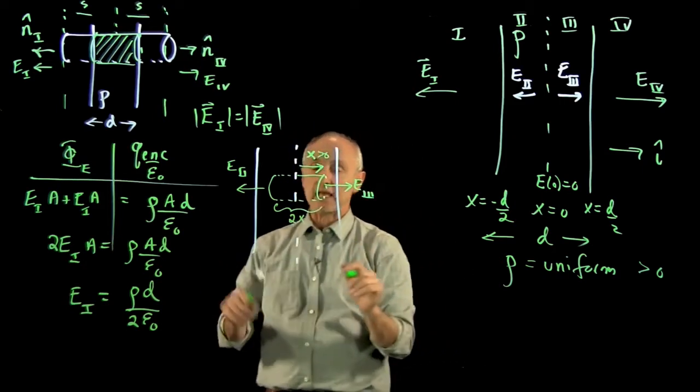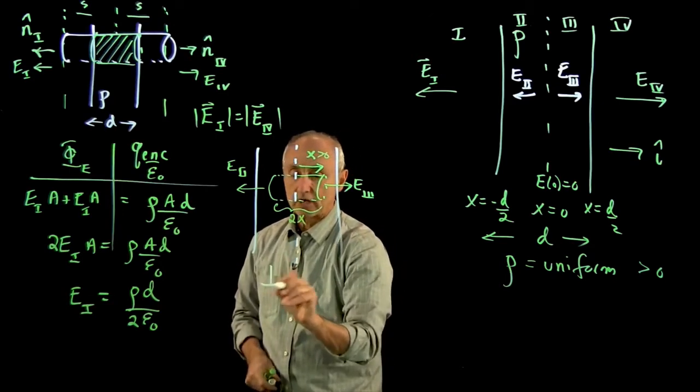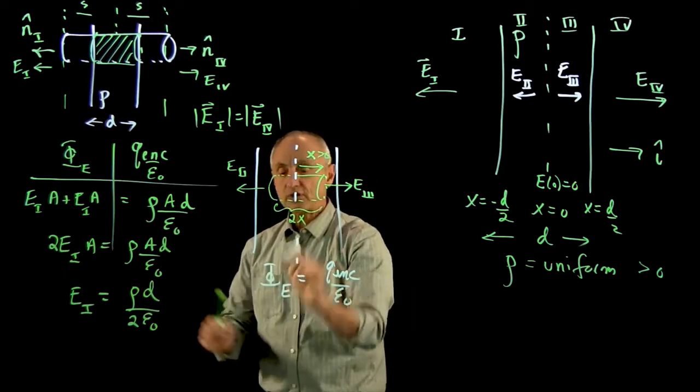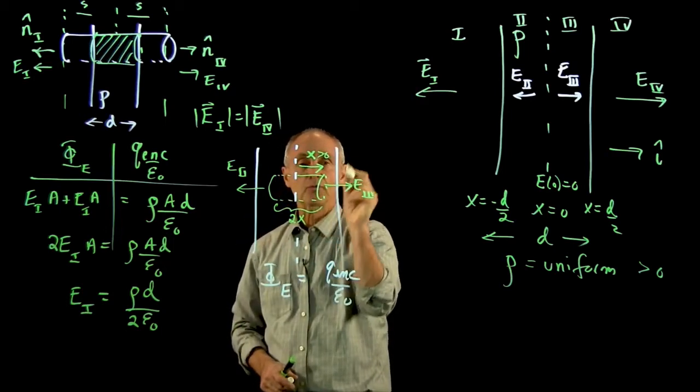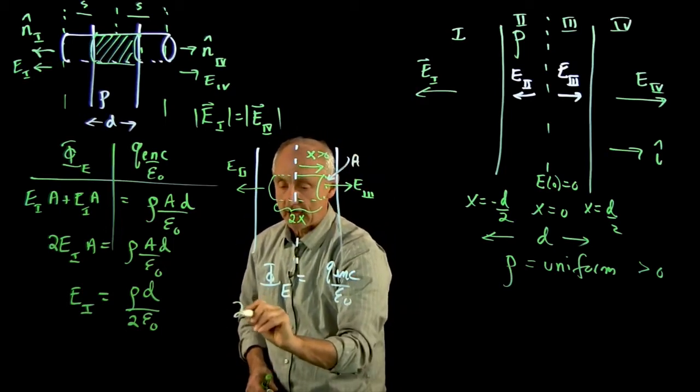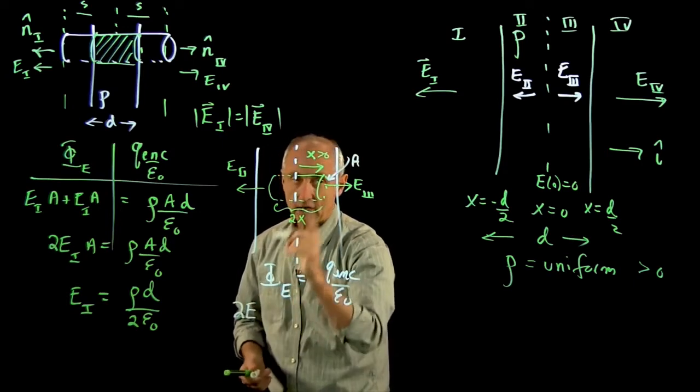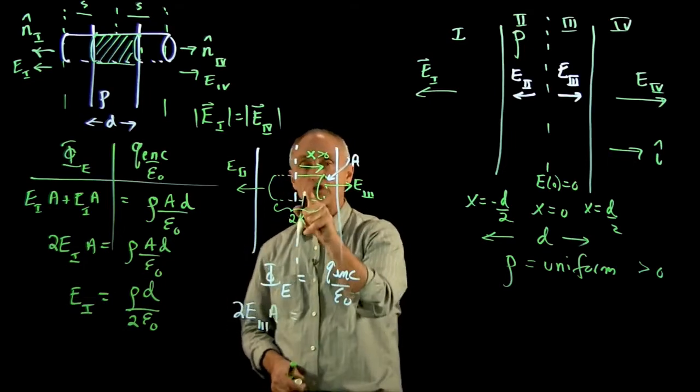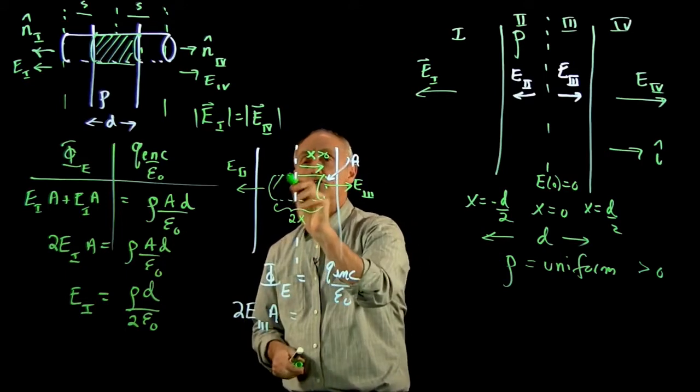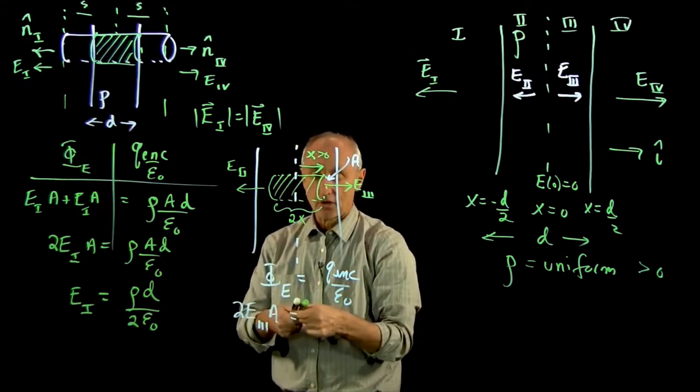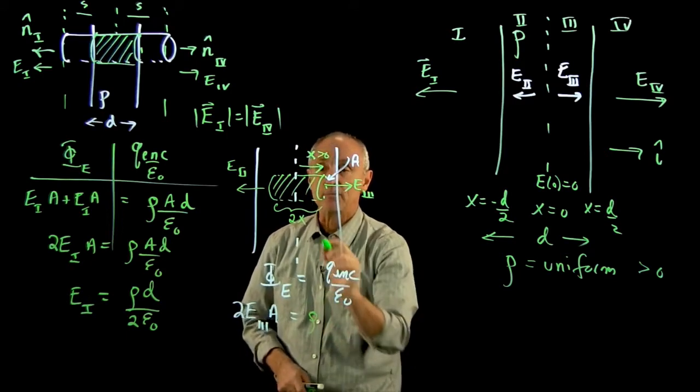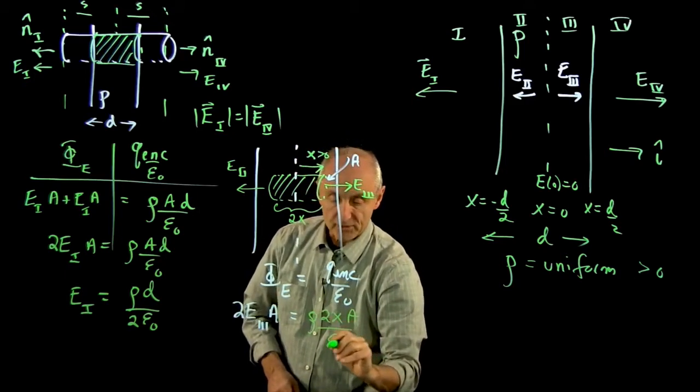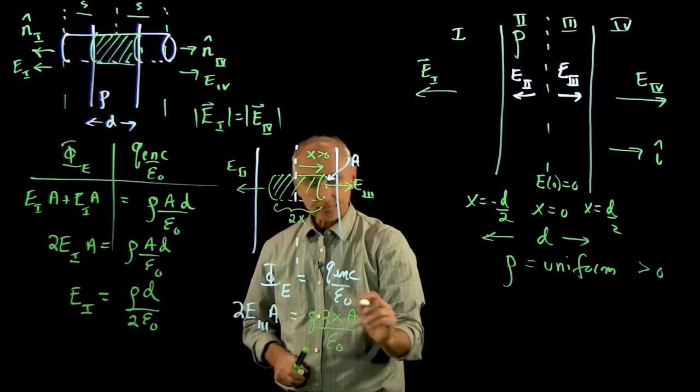And now, by symmetry again, our Gaussian law calculation, flux of e equals charge enclosed over epsilon 0. Well, the flux is still one side over here, plus one over there. We still have a cross-sectional area a. So I get 2e, and I'll just call it, it doesn't matter, they have the same magnitudes. I'll call this time magnitude 3a equals the charge enclosed. Shade in that charge enclosed. And we get rho times the size 2x times a over epsilon 0.